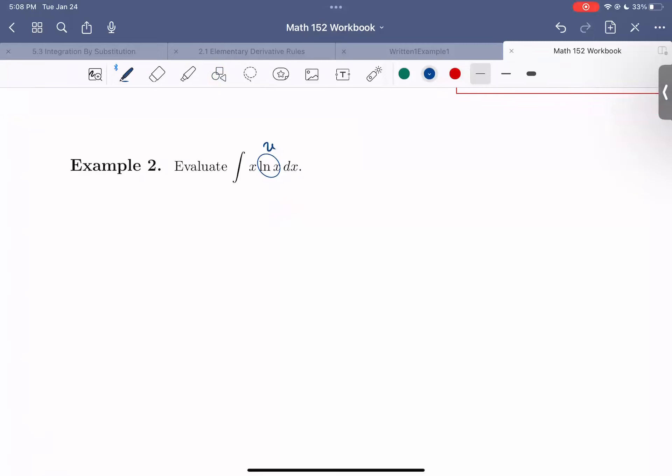So let's let u equal ln of x and then dv equal x dx. So we're going to let u equal ln of x, dv is going to be equal to x dx.